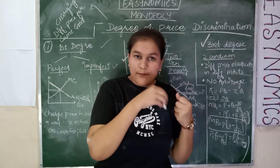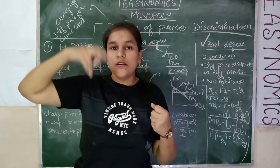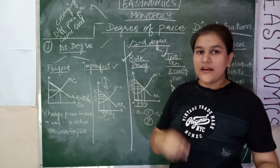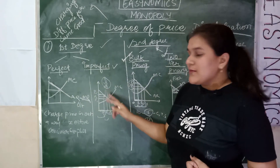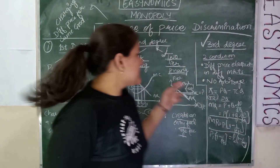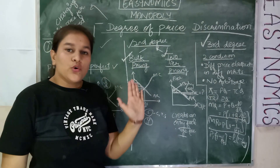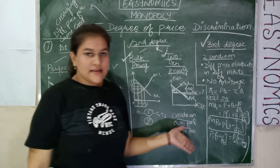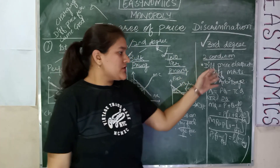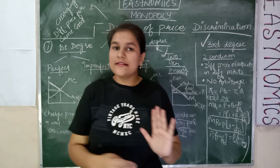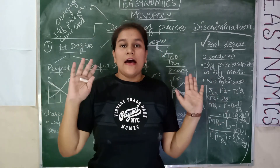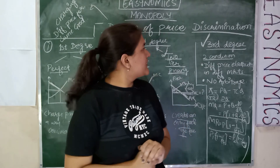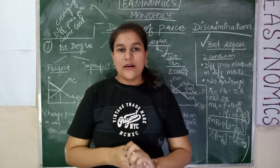So to summarize: in first-degree perfect price discrimination, you charge a different price for each and every unit. In imperfect first-degree, you charge different prices for different sets of commodities. In second-degree bulk pricing, you charge a lower price when the consumer increases the number of units purchased. In two-tier pricing, you charge two types of fees — an entry fee and a usage fee. And in third-degree price discrimination, you charge different prices in different markets existing in the economy. This completes our topic of monopoly. In the next class, we will begin with monopolistic competition. Do subscribe to the channel for more updates.